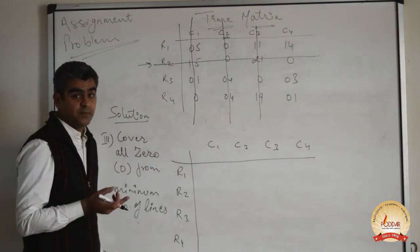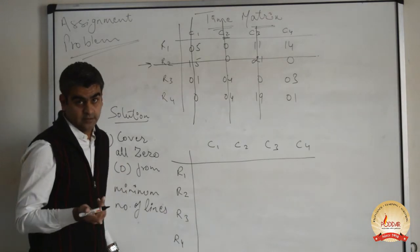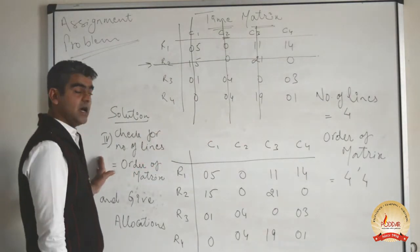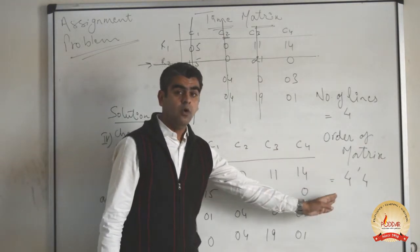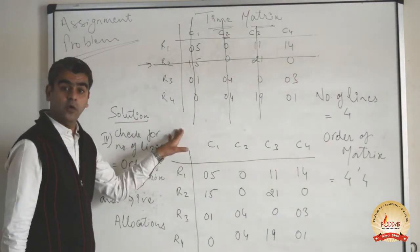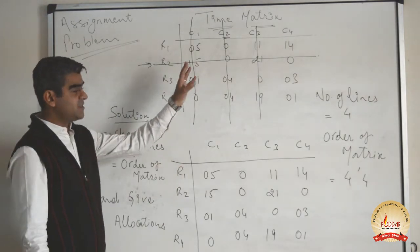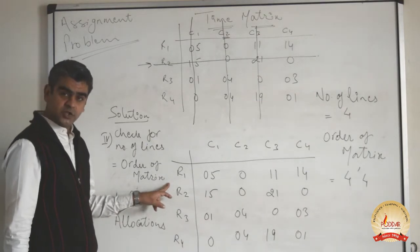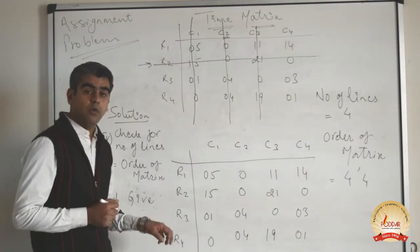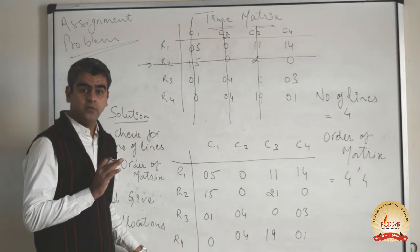We move to step number 4 and check that the number of lines is equal to the order of the matrix. The number of lines drawn is 4 — lines 1, 2, 3, and 4. The order of the matrix is also 4. Since the number of lines equals the order of the matrix, we can proceed to give allocations. Each row and each column must have exactly one allocation.